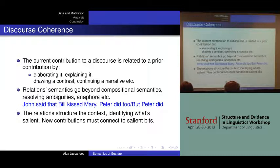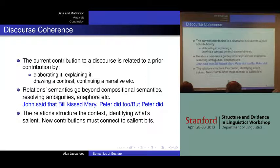Take VP ellipsis: 'John said that Bill kissed Mary, Peter did too' — we resolve 'Peter did' to Peter said that John kissed Mary, because that maximizes the parallel structure. But 'John said that Bill kissed Mary, but Peter did' — by changing to a contrast relation through a different cue phrase, I've changed the resolution of the VP ellipsis. There's a strong preference for 'Peter did' resolving to Peter kissing Mary.